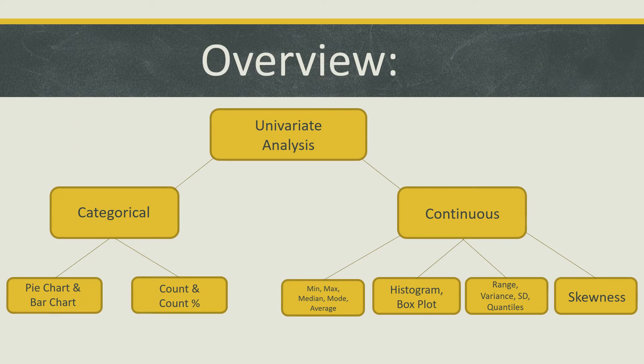Here is a quick overview on univariate analysis and its components. Depending on the type of variable you are dealing with, there are many different descriptive measures that can be conducted to summarize data. There are two different types of data we deal with, categorical and continuous. For categorical variables, you can use pie or bar charts to depict patterns and trends, or counts and count percent.